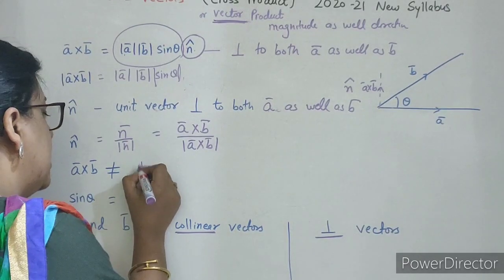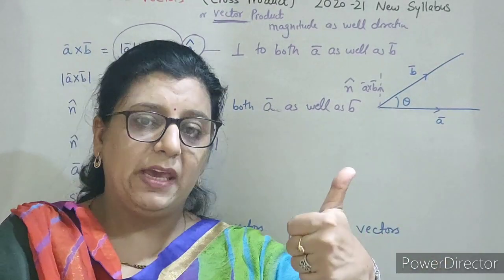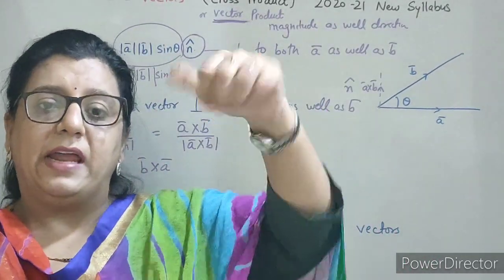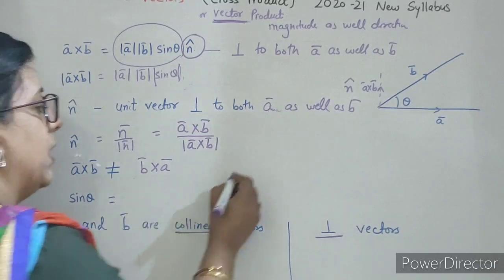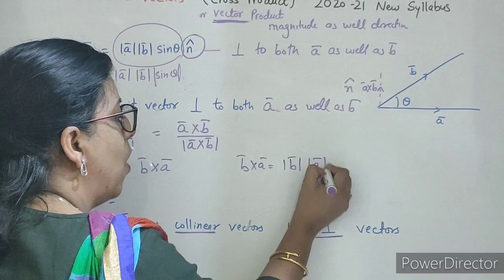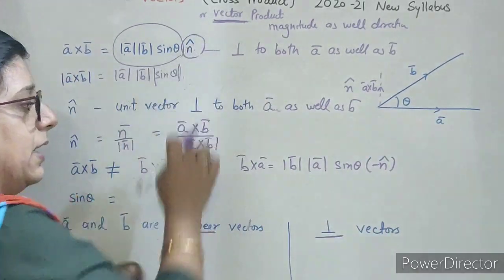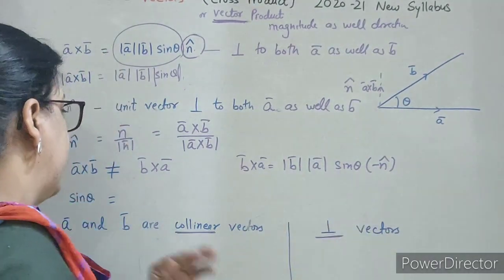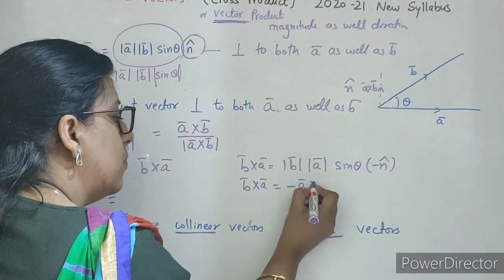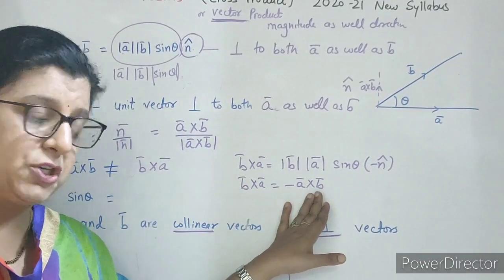A cross B is not equal to B cross A. Because if A cross B is outward direction, then B cross A is in inward direction. So B cross A kya hoga? Mod B, mod A, sin theta — but yaha par minus n̂ aa jayega. Therefore B cross A equals to minus A cross B. Dono equal nahi hai kyunki dono opposite direction mein hai.